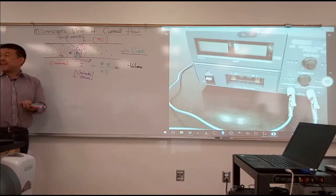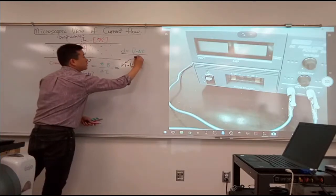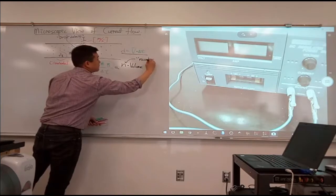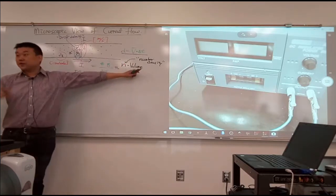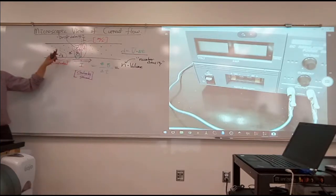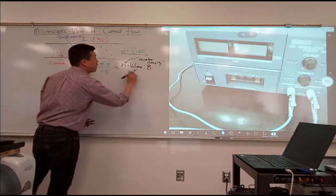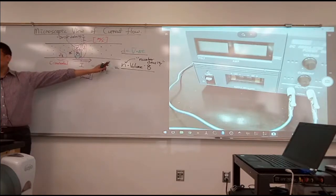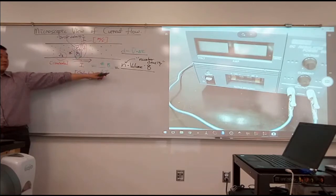I'm just going to use the standard letter for charge density — lowercase n. This is what's sometimes called number density, as in it's the number of particles per volume. So you multiply it by volume, you get the number of particles. I forgot one — I have to multiply it by charge per particle. That way I get the actual amount of charge in coulombs. So this expression expresses the amount of charge that's crossing this boundary in an amount of time delta t.